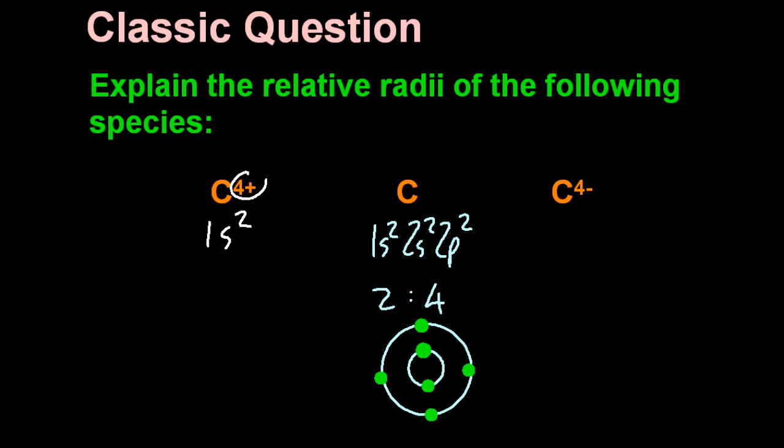So why is the carbon ion smaller? Well, it's lost those four electrons, and it's lost the main energy level, or shell.